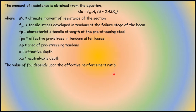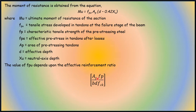The value of FPU depends on the effective reinforcement ratio (ERR), which is defined as AP × FP divided by (B × D × FCK), or equivalently FP × AP divided by (FCK × B × D). This formula is used in IS 1343 for calculating the moment of resistance of the member.